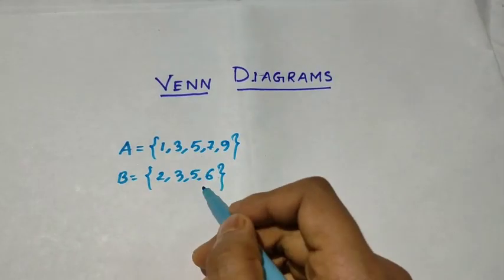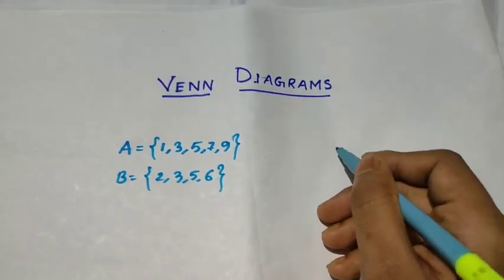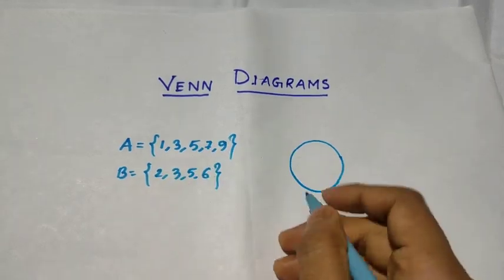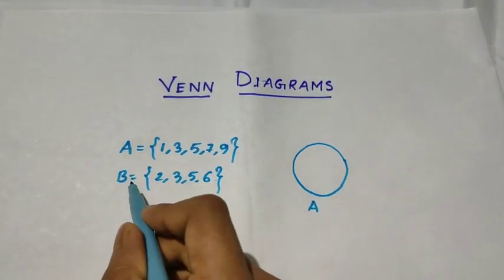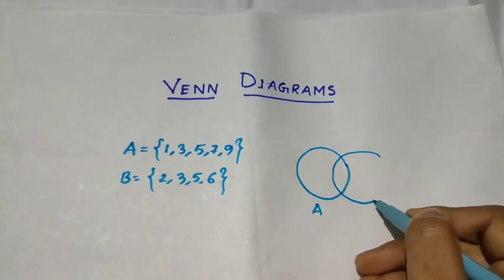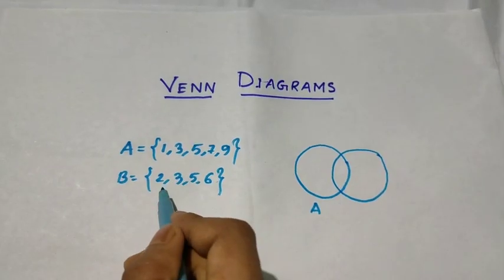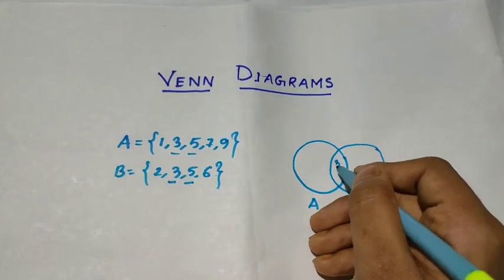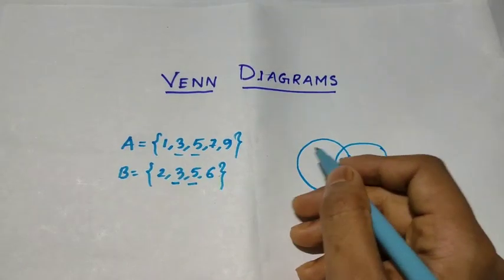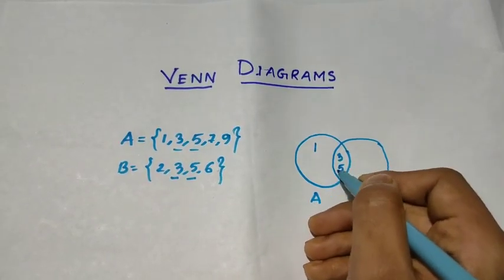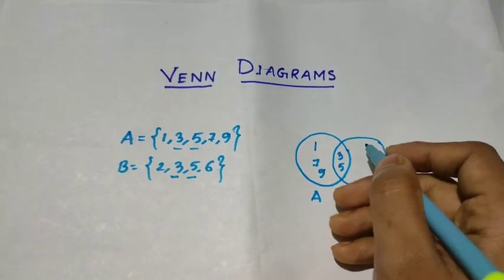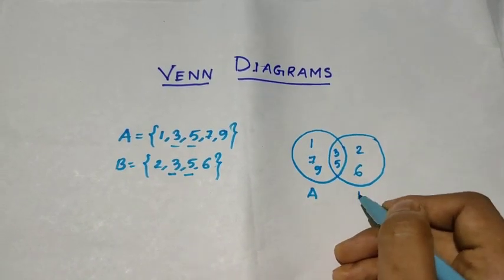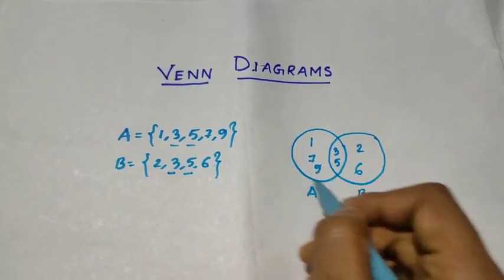So if we have to represent these two sets graphically, what do we need to do? We have to draw two circles. First I will draw circle A, and then B. Now we can see that 3 and 5 are common in both sets, so 3 and 5 belong to the overlapping region. In set A we have 1, 3, 5, 7, 9. And in set B we have 2, 3, 5, 6. This is a graphical representation of the two sets.